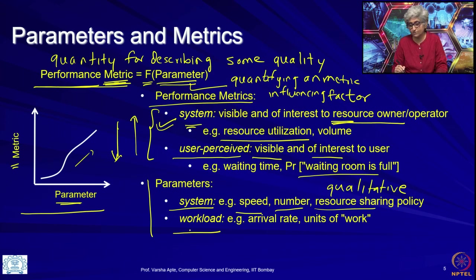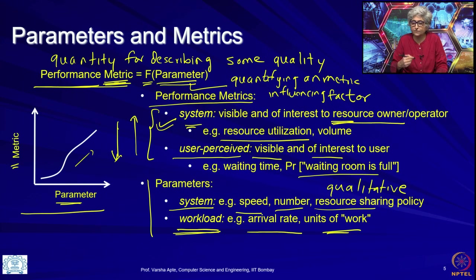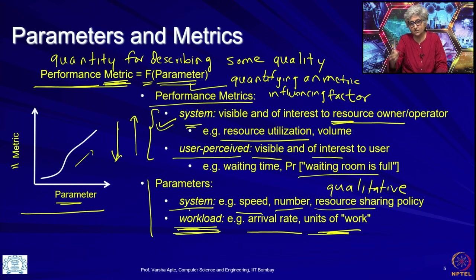Regardless of system parameters, performance will also be influenced by workload parameters. As discussed earlier, workload parameters include arrival rate — how many packets or jobs per second are coming to this resource — and how much work each user is bringing to the system. For example, one person at a ticket vendor may just want to buy one ticket quickly, but the next person might spend a lot of time choosing seats. So the amount of work per user is a workload parameter, not a system characteristic.